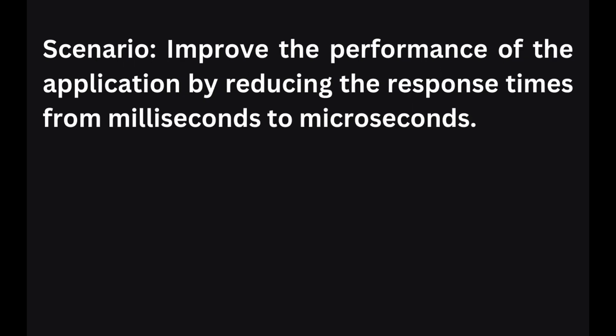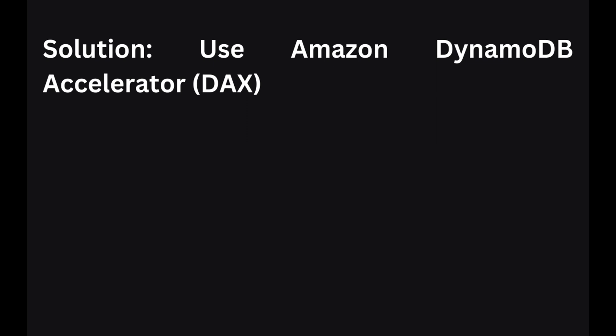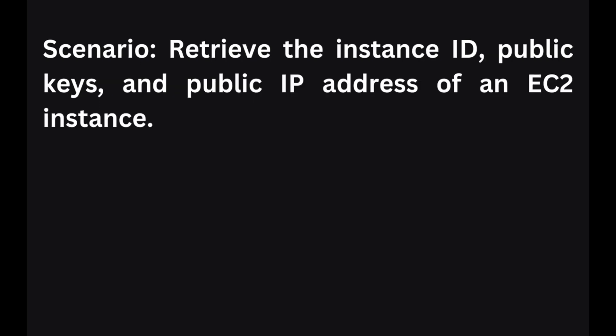In the next scenario, you need to improve the performance of an application by reducing response times from milliseconds to microseconds. To achieve faster response times in the microsecond range, you can use Amazon DynamoDB Accelerator, also called DAX. DAX is an in-memory caching service for DynamoDB that significantly reduces database read latency and improves application performance.